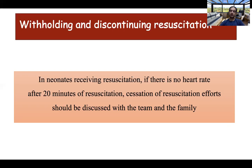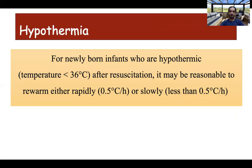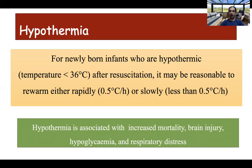Hypothermia is defined as temperature less than 36 degrees Celsius and should be prevented. If present, it should be corrected as soon as possible. Both rapid and slow rewarming have been shown to be effective with no difference between the two methods. Hypothermia is associated with increased morbidity including brain injury, hypoglycemia, and respiratory distress, and also increases mortality.